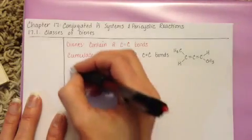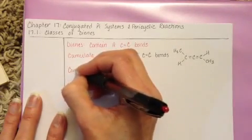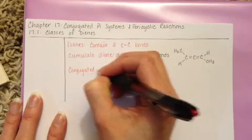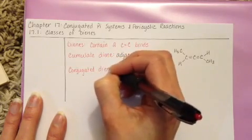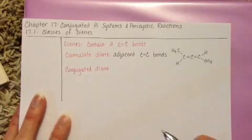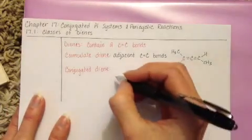And we also have a conjugated diene. In a conjugated diene, the double bonds are separated by one carbon-carbon single bond.